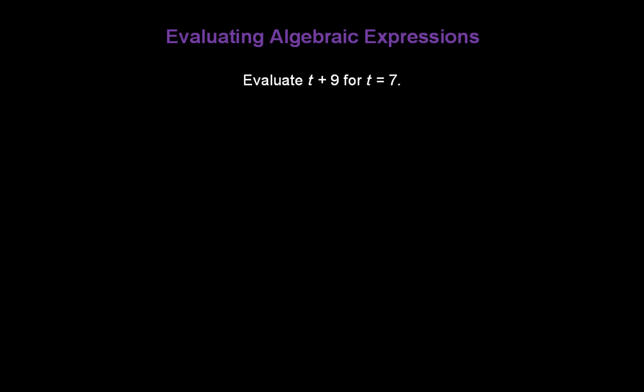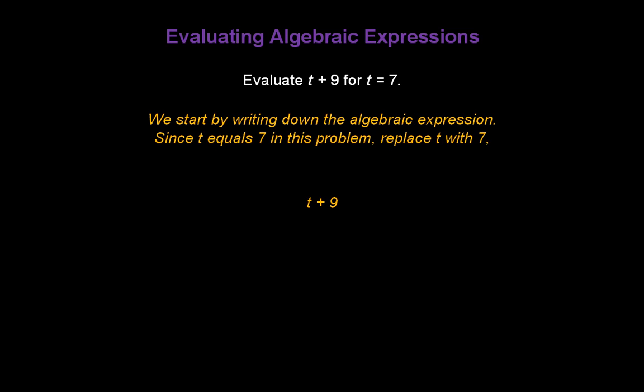Now let's evaluate some algebraic expressions. Let's evaluate t plus 9 for t equal to 7. The first thing we should do is write down the algebraic expression: t plus 9. Now since t equals 7 in this problem, I'll replace t with the number 7 and rewrite the expression as 7 plus 9. Then simply solve the expression — 7 plus 9 is 16, and that's the answer.